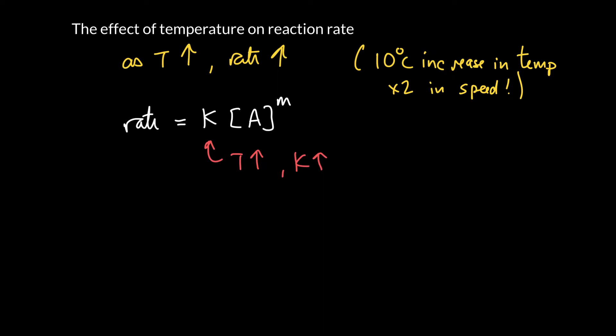This was known for a long time and there were lots of theories about how to predict the rate constant. In 1889, a chemist called Svante Arrhenius, who also came up with the early acid-base theory, said that the rate constant itself can be thought of as being a product of two things.